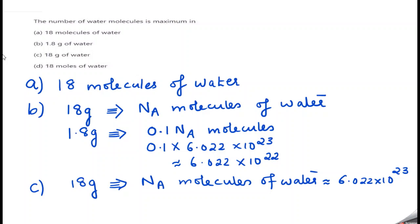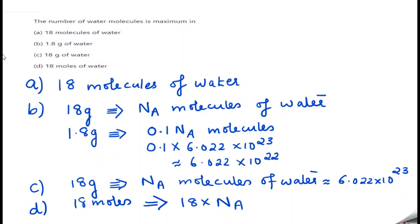Now option D is 18 moles of water. We know the standard relationship: one mole contains Avogadro's number of molecules. So 18 moles means 18 × Nₐ = 18 × 6.022 × 10²³ molecules. Comparing all four options, 18 × Nₐ is a very huge number compared to A, B, and C.